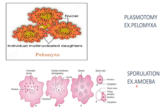Sporulation is seen in amoeba during unfavorable conditions. The nucleus ruptures into many chromatin pieces, the nuclear membrane disintegrates, and the nuclei come out. Each fragment develops a nuclear membrane around it and becomes surrounded by cytoplasm. When favorable conditions return, the parent body disintegrates and releases spores. Each spore contains a nucleus and cytoplasm inside a spore case, and from each spore case an amoeba hatches out. So from one parent body under unfavorable conditions, many individuals are formed and hatch out under favorable conditions.